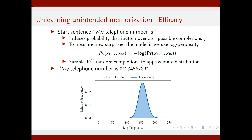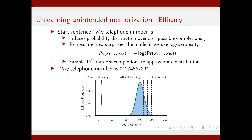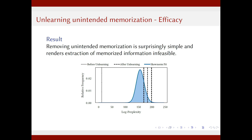After performing our unlearning algorithms and checking the log perplexity of the canary sequence again, we find it has shifted much further to the right of the distribution. The three lines in the plot correspond to different replacements of the original number, which affects how strongly the memorization is erased. With the best replacement, the memorized number becomes a real outlier, and it is very unlikely that the model will predict this number. The unlearning was successful, and surprisingly, even our first-order method using only gradient information can perform this unlearning.